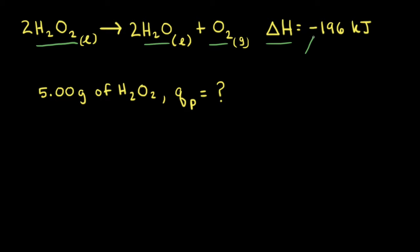The negative sign means the reaction is exothermic. For the units, sometimes you might see kilojoules, sometimes you might see kilojoules per mole, and sometimes you might see kilojoules per mole of reaction.